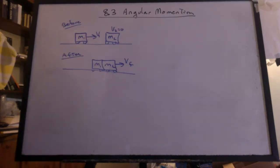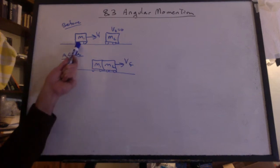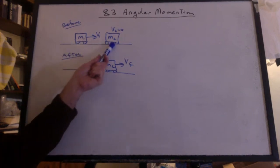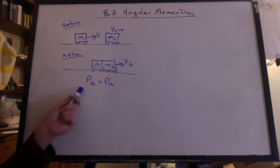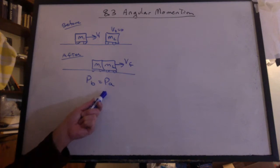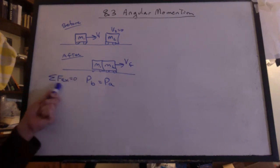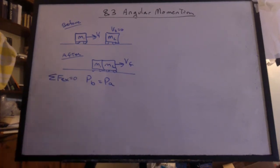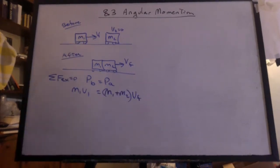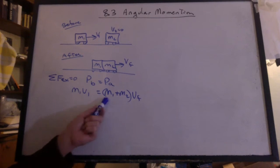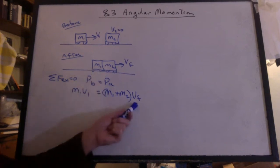Let's review linear momentum with an inelastic collision. A cart comes in, hits another cart at rest. Afterwards, they stick together and move off. Why can we say the linear momentum is conserved? The sum of the external forces is zero. The momentum before is m1v1. The momentum after is both masses stuck together times the final velocity.